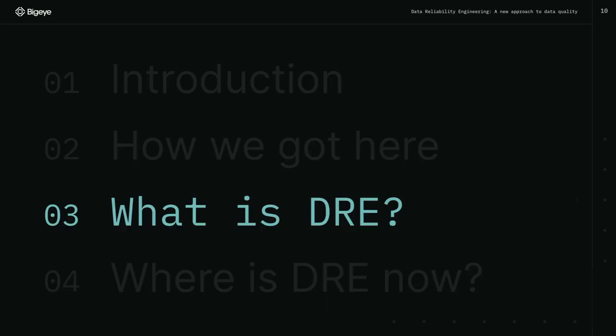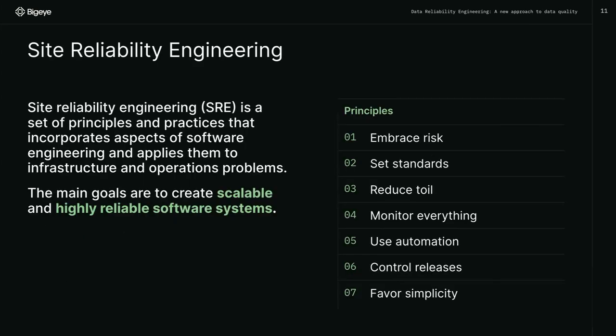Let's talk about data reliability engineering. Show of hands — who here understands what site reliability engineering is? About a quarter, great. So SRE is a set of practices and principles that you can apply to software engineering in order to help create scalable and highly reliable software systems. SRE came from Google — Google wrote the SRE Bible — and there's a huge book that talks about the seven principles of SRE.